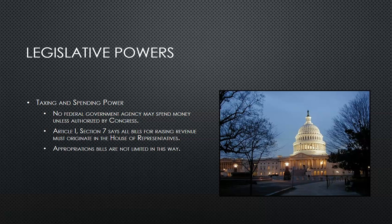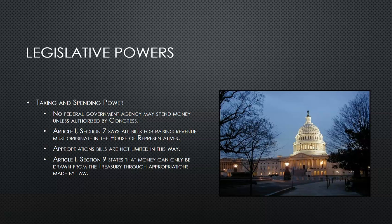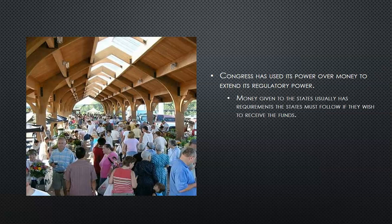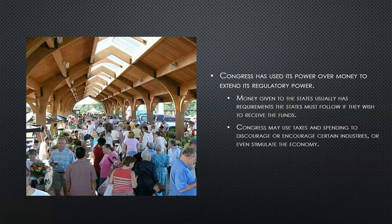Appropriations bills, however, are not limited in this way. Article 1, Section 9 states that money can only be drawn from the Treasury through appropriations made by law. Congress has used its power over money to extend its regulatory power. Money given to the states usually has requirements the states must follow if they wish to receive the funds.